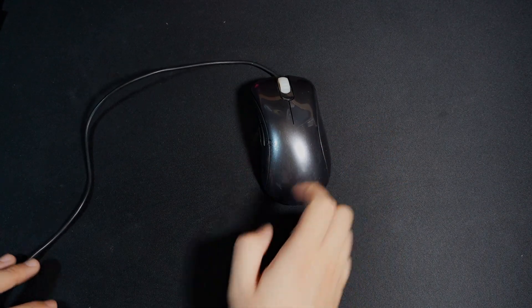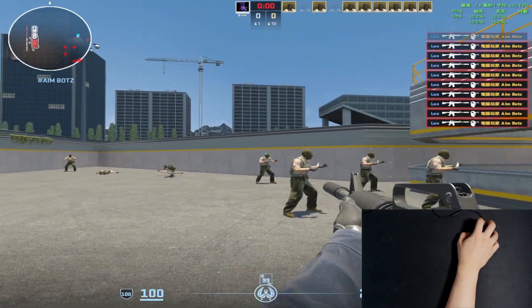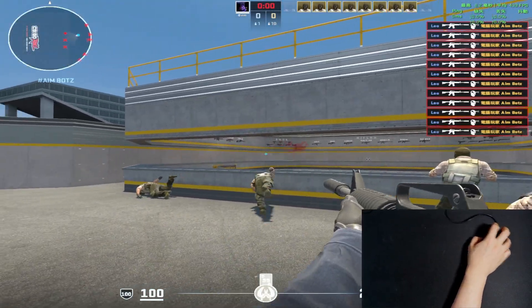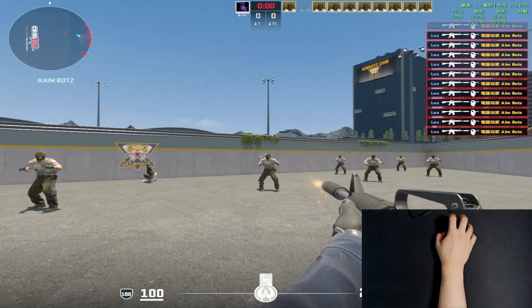Surprisingly, I noticed a difference. With the EC2A, my flicks were perfectly horizontal. The crosshair stayed at head level easily.